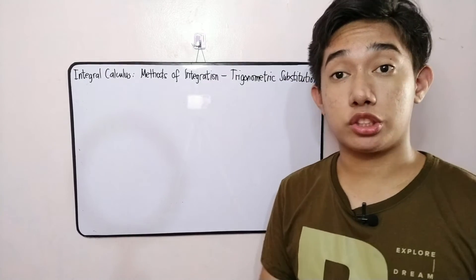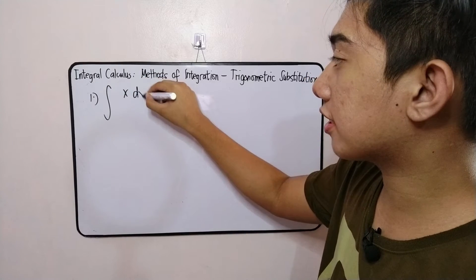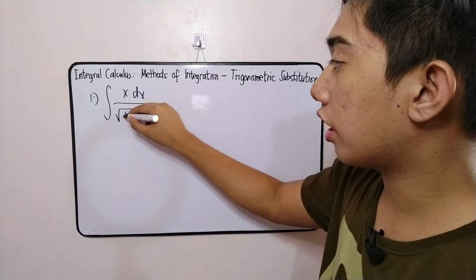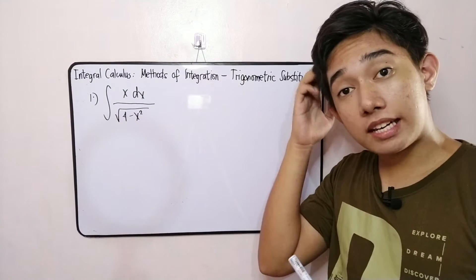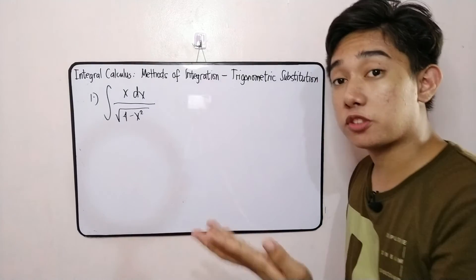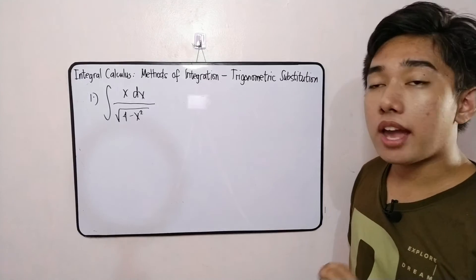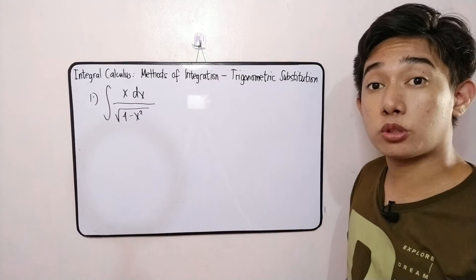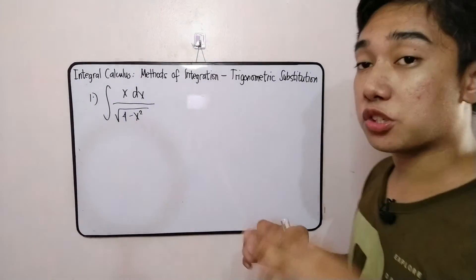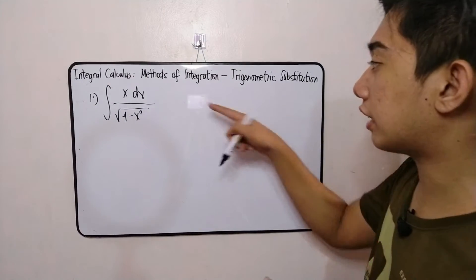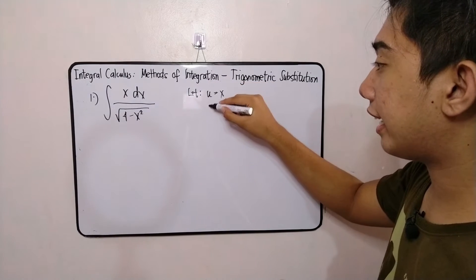To understand further, let's have examples. The first one: the integration of x dx all over the square root of 4 minus x squared. As you can observe, we could do u-substitution here by substituting 4 minus x squared and getting its differential. However, for the purpose of demonstrating trigonometric substitution, we will use that method. First, we assume values: let u equal x and a equal 2.